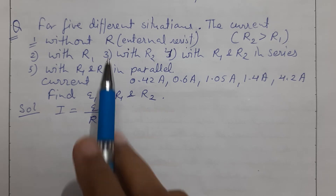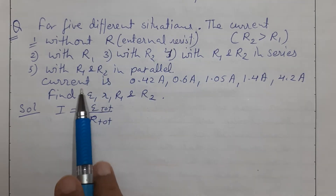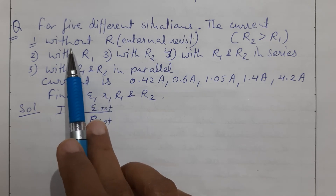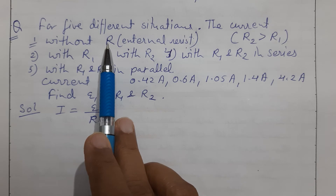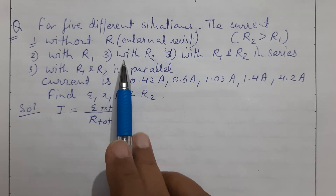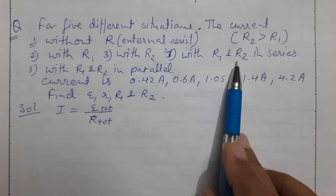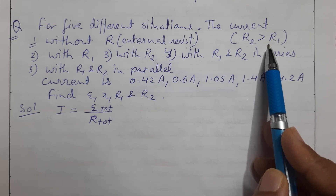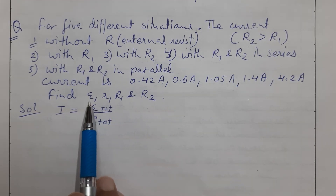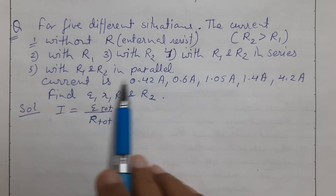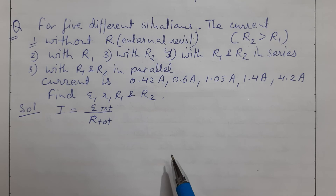Next question: you are given 5 different situations with current values 0.42, 0.6, 1.05, 1.4 and another value. The situations are: (1) circuit without external resistance, (2) EMF with resistance R1 connected, (3) EMF with resistance R2 connected, (4) R1 and R2 in series, (5) R1 and R2 in parallel. It is also given that R2 is greater than R1. Find EMF, internal resistance r, R1, and R2.